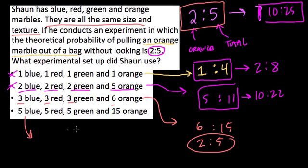But just for fun, let's try the last one. 5, 10, 15, and 15 more is 30. So I'm adding these up. So it's 15 orange out of 30 total. That's a 1 to 2 ratio, or 1 out of 2 ratio, excuse me. So this one doesn't match as well.